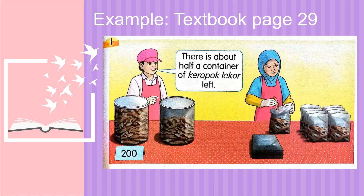Let's look at the example. This example is in your textbook page 29. Now, look at the first container. There are 200 keropok lekor inside — ada 200 keropok lekor di dalam container yang pertama ini. This lady worker is packing the keropok lekor in the plastic bag. Pekerja ini, dia bungkus semula keropok lekor tu ke dalam plastic bag.